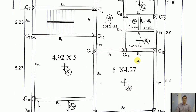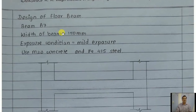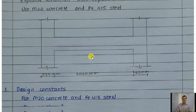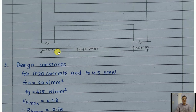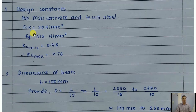Now let us start with the design of beam B7. The width of the beam is considered as 150 mm since it is a secondary beam, not part of the main moment resisting frame. Exposure condition is mild. This problem was solved by one of our students, so we will also see the probable mistakes students normally make. The clear span of the beam is 2460 mm, with left and right support widths of 230 mm each. Design constants: fck = 20 N/mm², fy = 415 N/mm², xu_max = 0.48, Ru_max = 2.76.